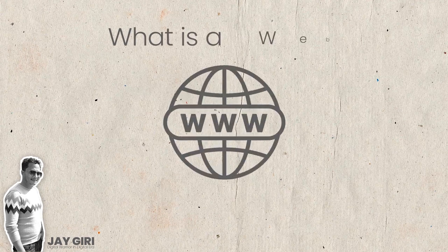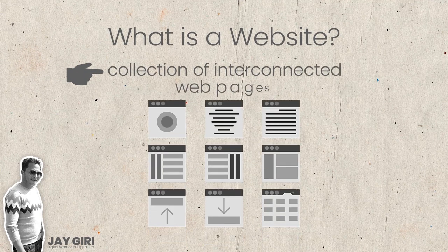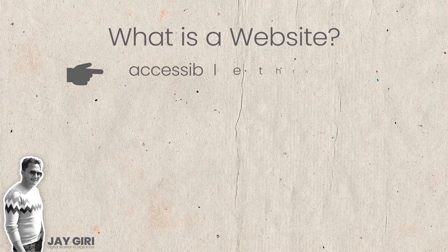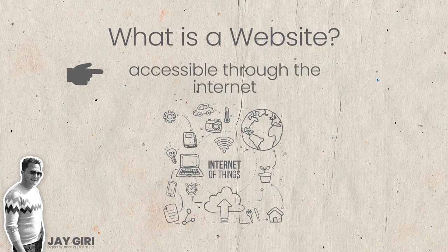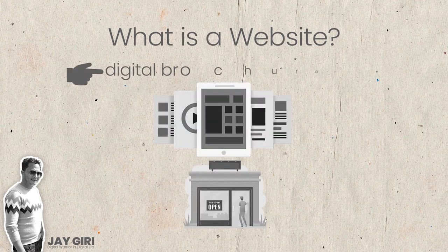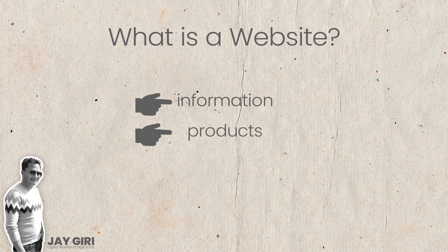What is a Website? A Website is a collection of interconnected web pages that share a common domain name and are accessible through the internet. Imagine it as a digital brochure or storefront — a place where you can find information, products, or services.